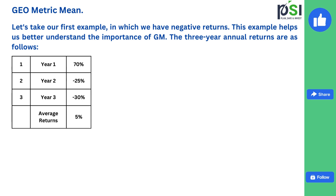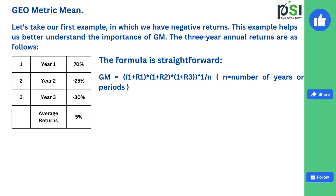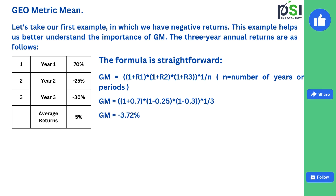The three-year annual returns are: Year 1 70%, Year 2 minus 25%, and Year 3 minus 30%. The geometric mean formula is: (1 plus R1) multiplied by (1 plus R2) multiplied by (1 plus R3), all raised to the power of 1 by N, where N is the number of periods. So: (1 plus 0.7) multiplied by (1 minus 0.25) multiplied by (1 minus 0.3), whole power 1 by 3. The geometric mean equals minus 3.72%.